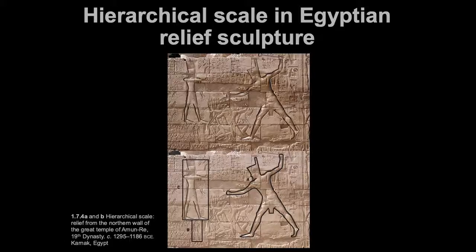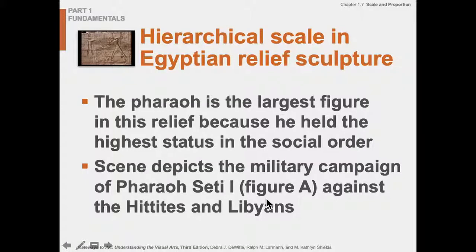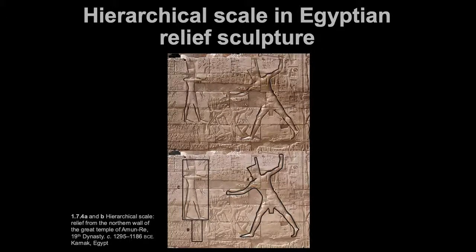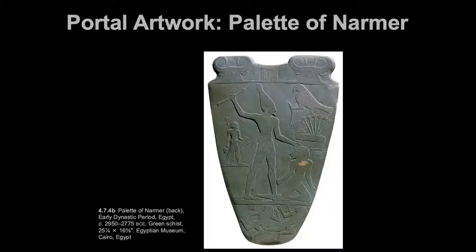This is a relief from the northern wall of the Great Temple of Amun-Re, 19th Dynasty — over 3,000 years old. The pharaoh is the largest figure in the relief and the highest in social order. It depicts a military campaign of Pharaoh Seti I against the Hittites and the Libyans. We can see these different segments with figures arranged according to hierarchical scale.